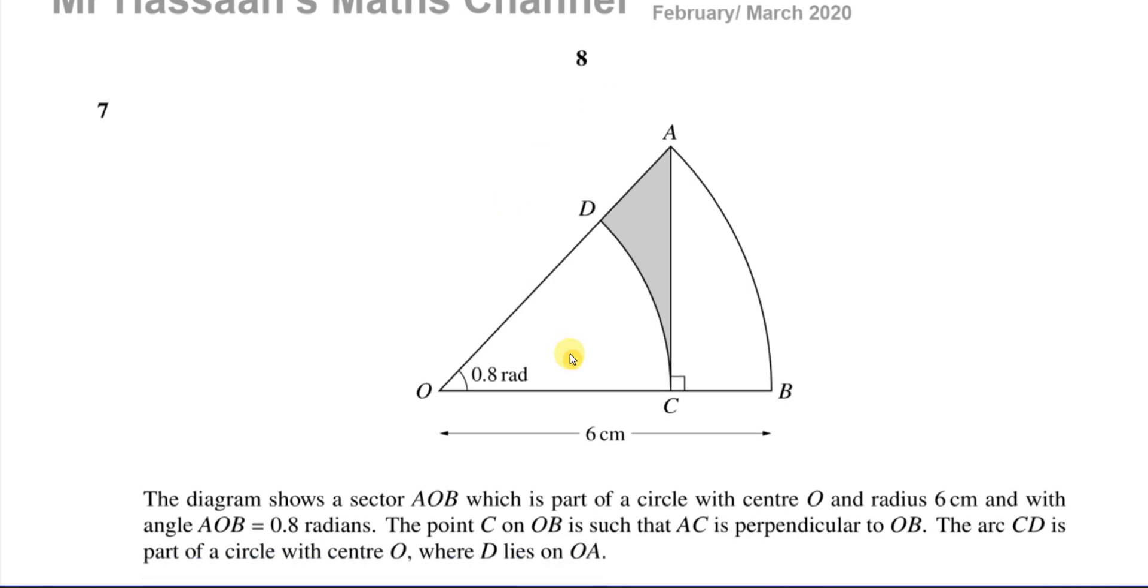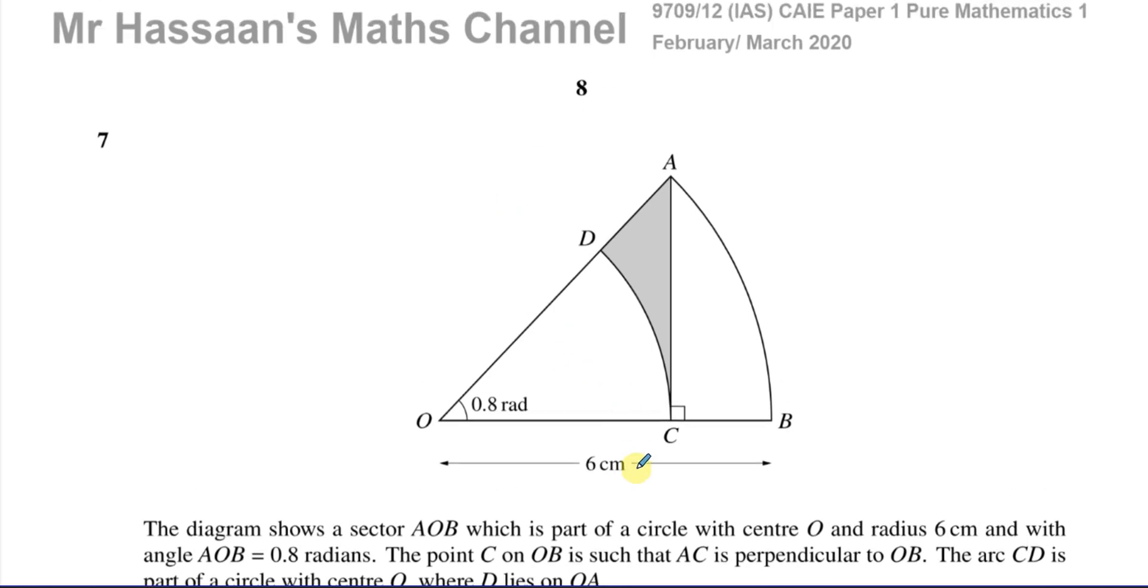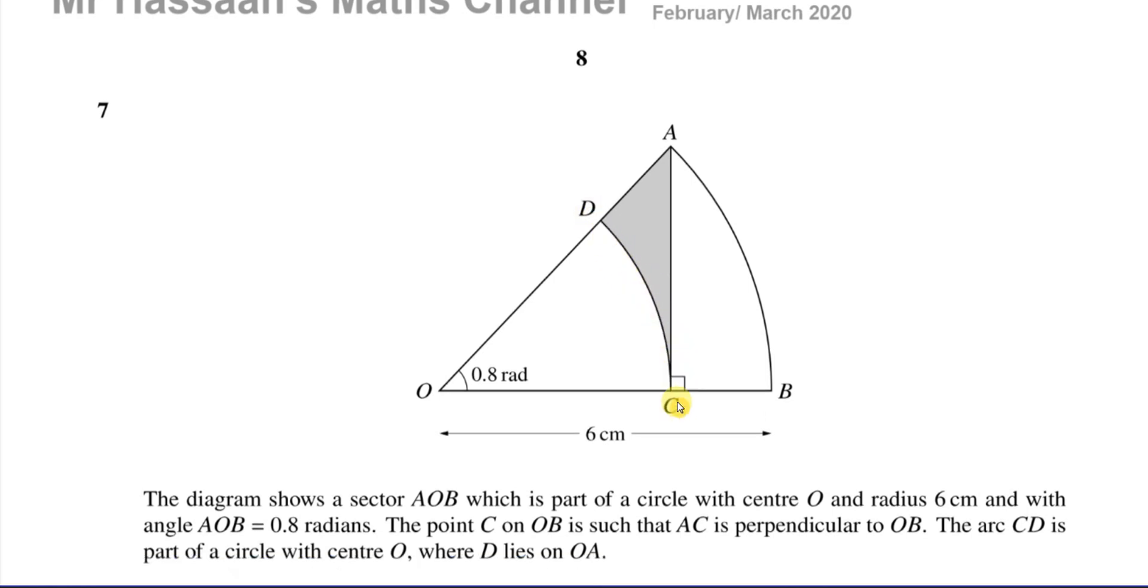That's something you should always be careful of. Then it says the point C on OB is such that AC is perpendicular to OB. So that's marked as a right angle. You can say that this is also a tangent to this small sector. There's a small sector here, right? ODC is also a sector of a circle. The arc CD is part of a circle with center O, yeah, as I assumed.